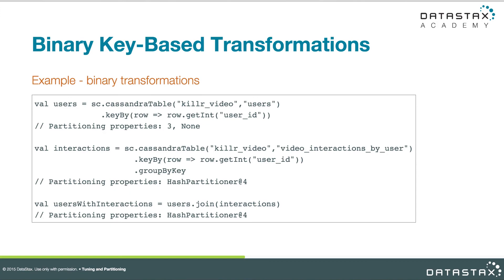Here's an example of a join so you can see this happening. We've done two Cassandra table queries and converted both into pair RDDs with a keyBy transformation, then joined them on user ID. The second RDD, called interactions, has a reusable hash partitioner and four partitions because a groupByKey is called on it. The first RDD, users, does not have a reusable partitioner and has three partitions. So in the output, the reusable RDD's partition count dominates and we get four partitions in the final result.